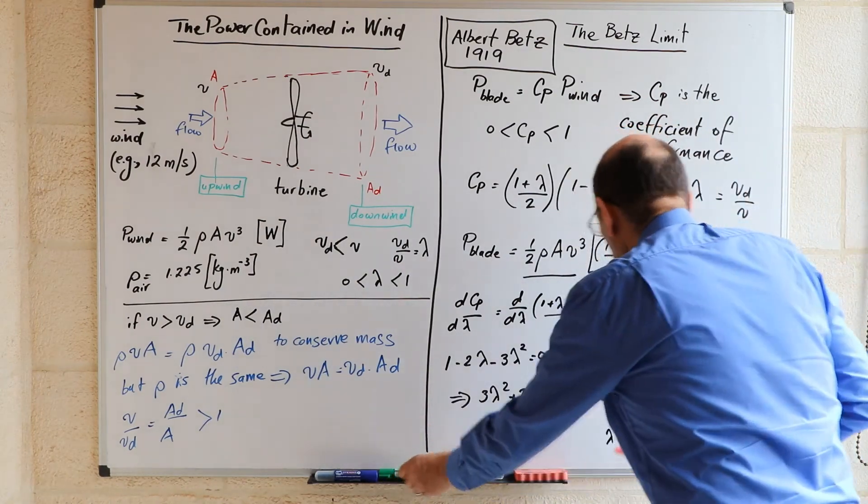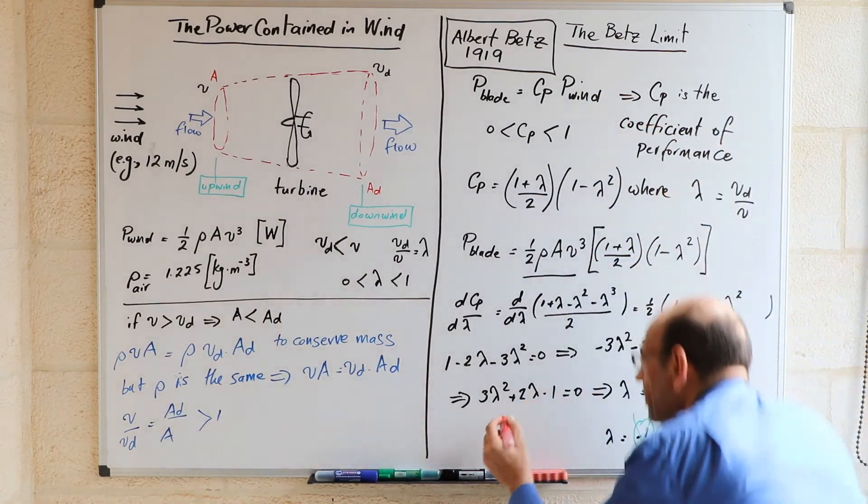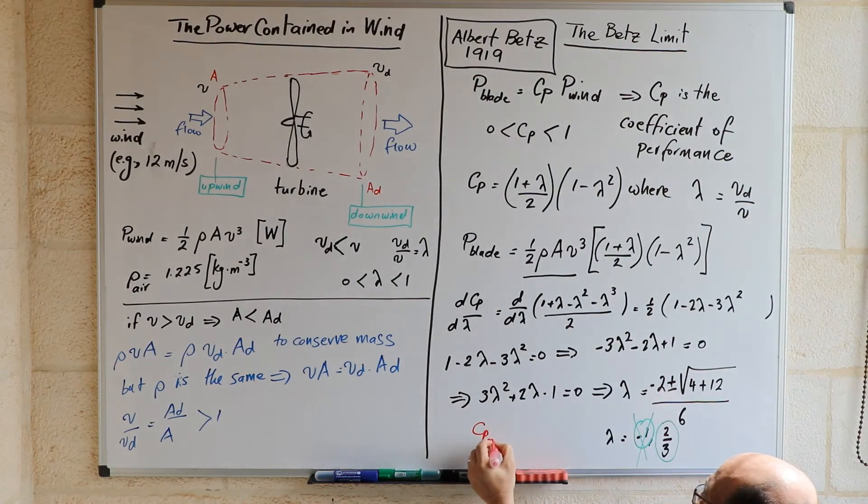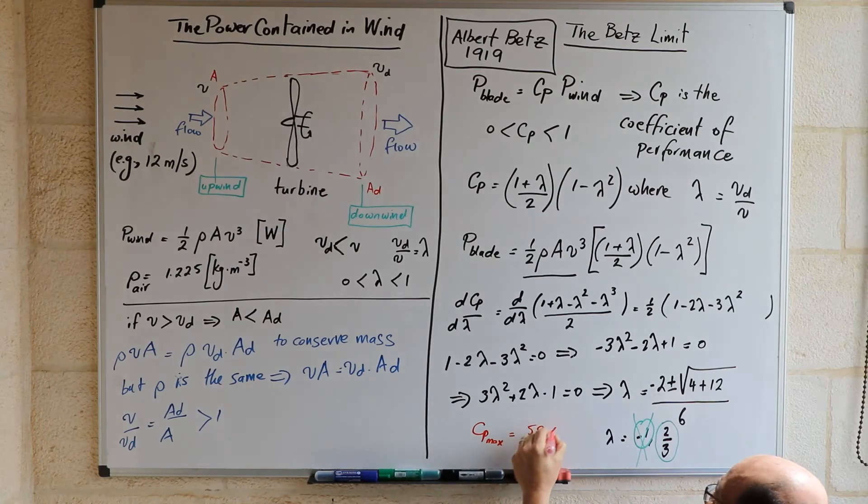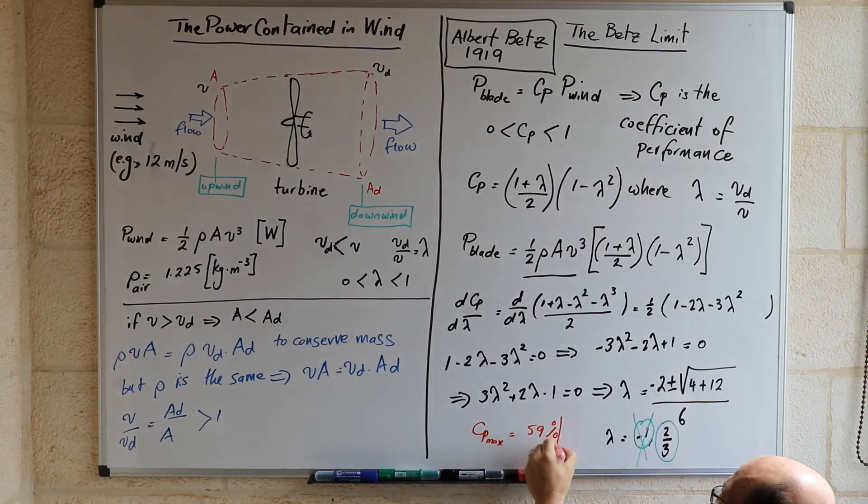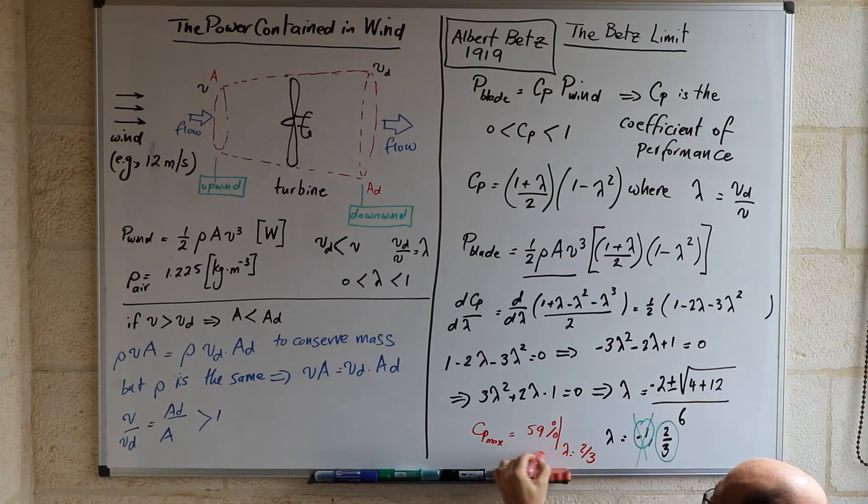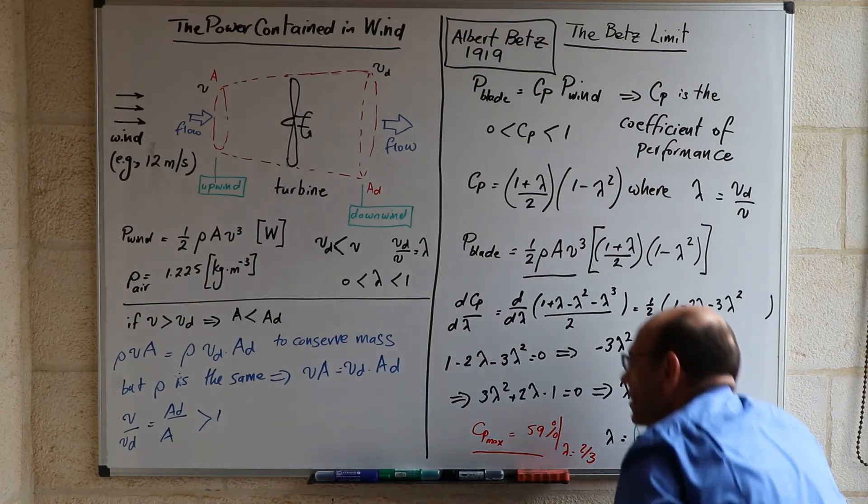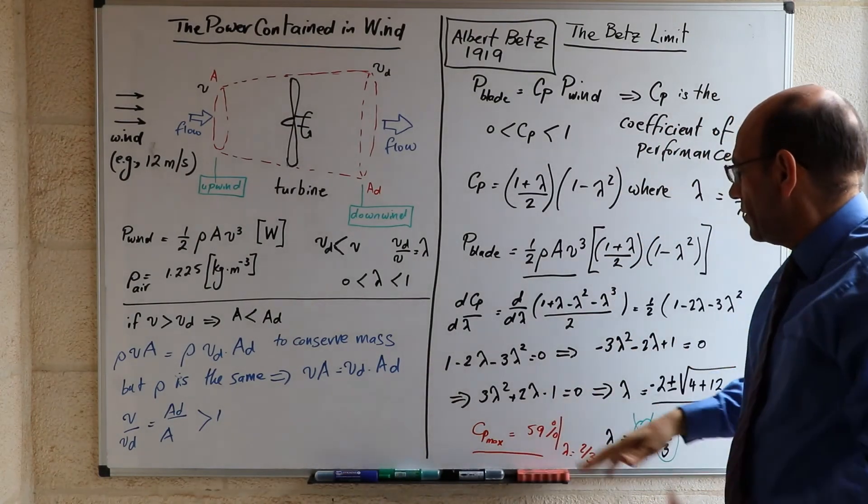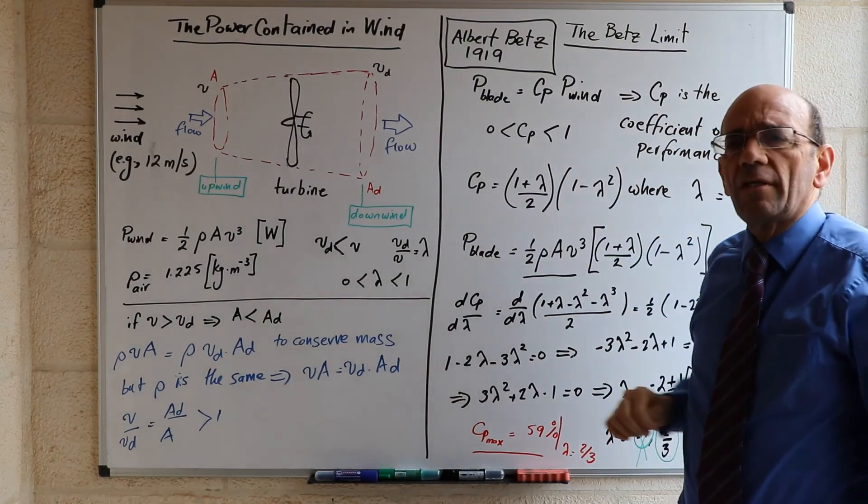And in fact, if you calculate CP at this point, the maximum value of CP is equal to 59 percent, and that's when lambda equals 2 over 3. That is actually the maximum possible coefficient of performance that any wind turbine can achieve.